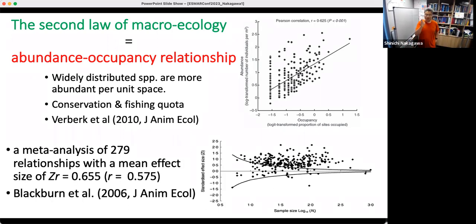There's a reason why this is called the second law of macroecology. Because there has been a meta-analysis, the traditional literature-based one. They got nearly 300 effect sizes, and the correlation was nearly 0.6. This is a funnel plot. You can see that this is zero, and most dense data points are around 0.6. This was done by Blackburn et al. That's why it's definitely by far the strongest relationship I've ever seen in ecology.